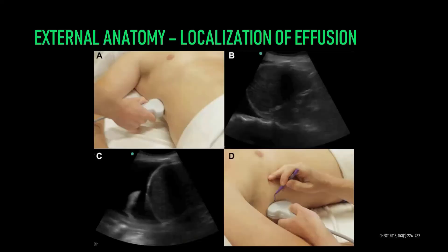So let's get on to the technique. The first thing you want to do is find a suitable site. The external anatomy is marked out in box A. Starting at the xiphoid, move the probe laterally along the costal margin until you're in the mid-axillary line. Place the probe down here and look at the image on the screen — it will generally look like what you see in box B. After identifying the diaphragm, slide the probe cephalad until you find an intercostal space with an adequate amount of fluid and no intervening diaphragm. In box D, the person is making a mark at the lowest intercostal space where pleural fluid is visible but there is no intervening diaphragm — this is a safe place for a needle pass.